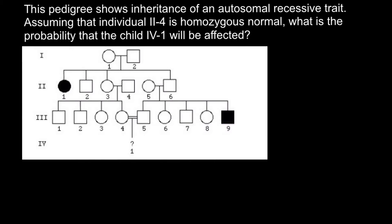How are we going to start solving this problem? If you think we have to start analyzing our pedigree from the top and going down, that is actually not so. We should start with the following logic: for the child in the fourth generation to be affected while both parents have a normal phenotype, both of these parents have to be heterozygous.